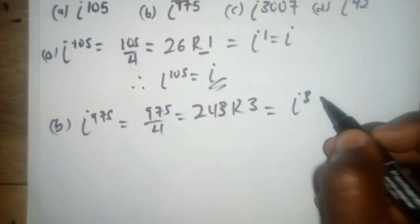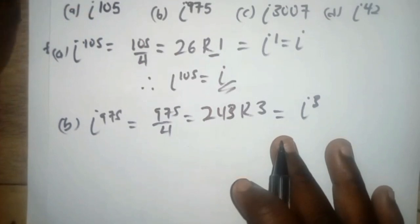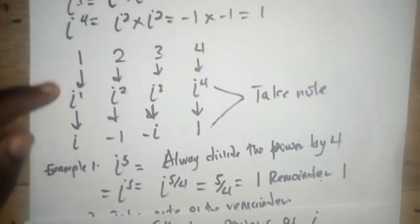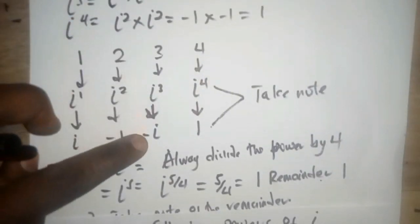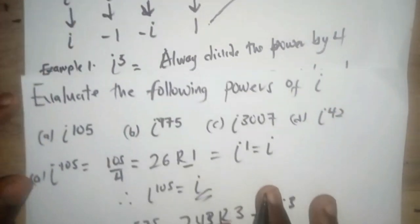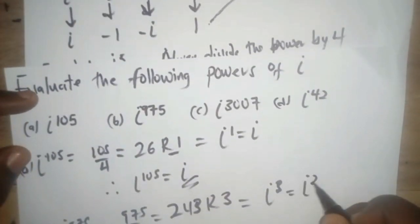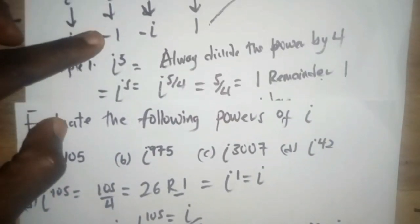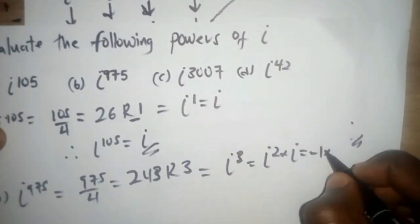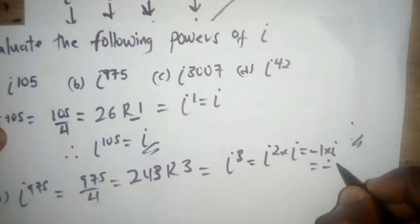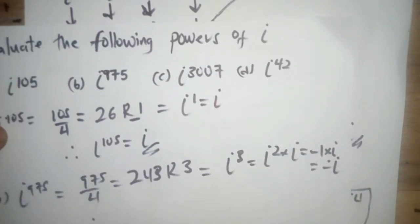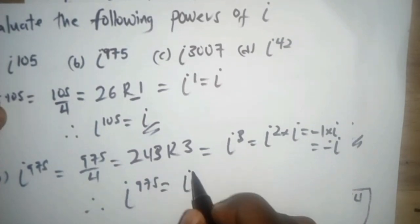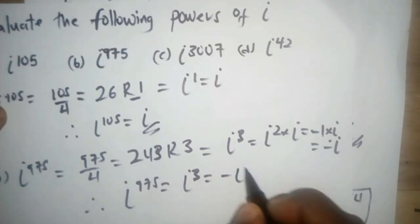For i to the power 975: divide 975 by four. We get a remainder of three. So we have i to the power three. Now i to the power three equals i squared times i, which is negative one times i, equal to negative i. Therefore i to the power 975 equals negative i.